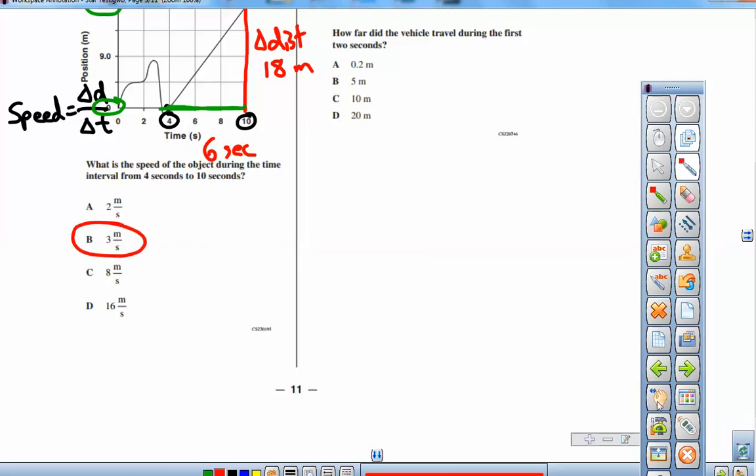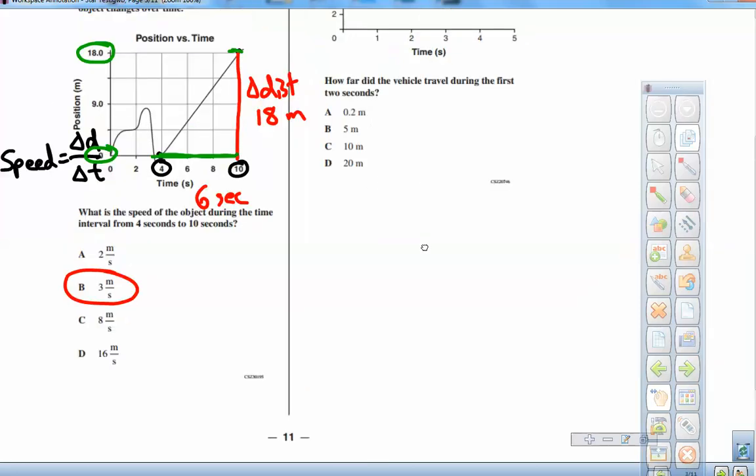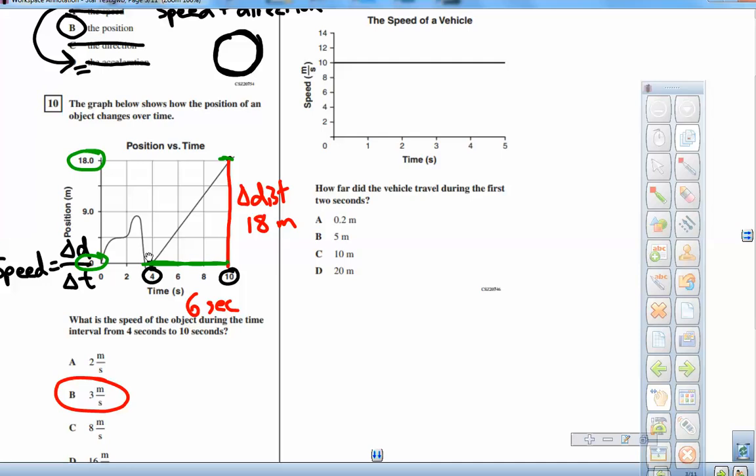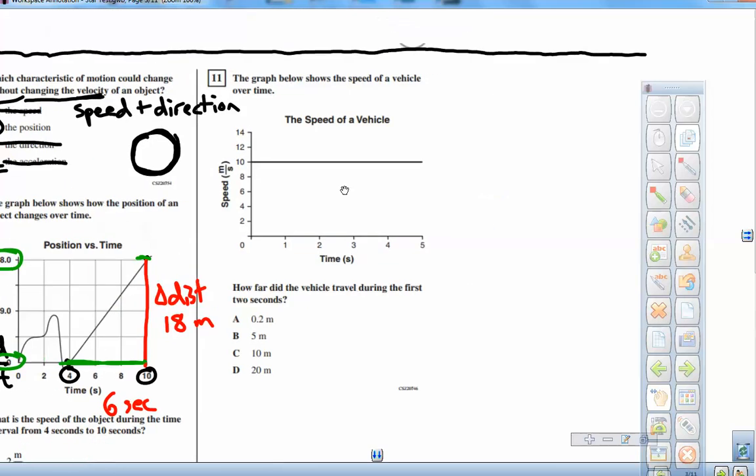All the other possible answers are mathematical mistakes a person could make on this. It's really a slope problem. You might want to remember that in a meters versus seconds graph, a distance versus time graph, the slope is the speed. So if you can find the slope of a line, you can find the speed.